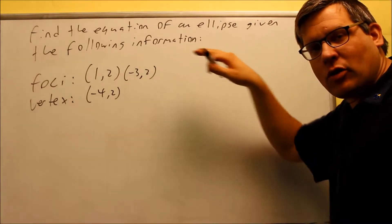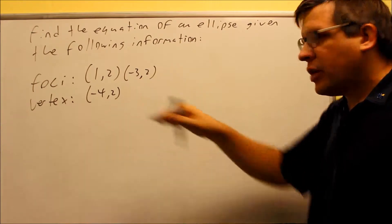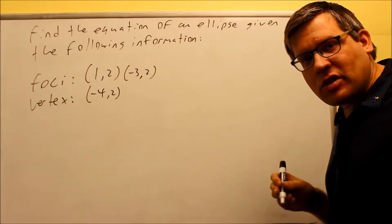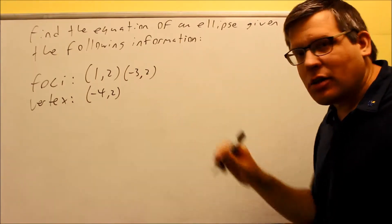Okay, one more. We want to find the equation for an ellipse. Here's the given information. We have a foci and we have a vertex that's given. We're not given the center, but let's go ahead and plot the information because we might be able to tell the center based on the picture.